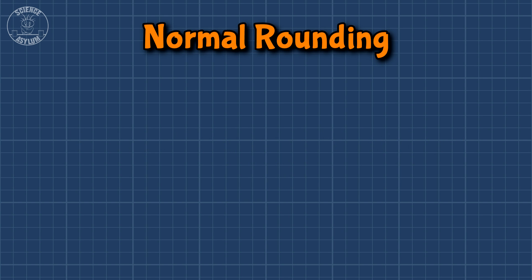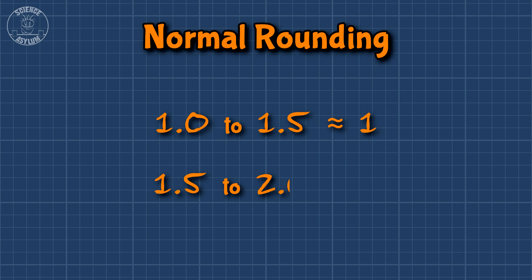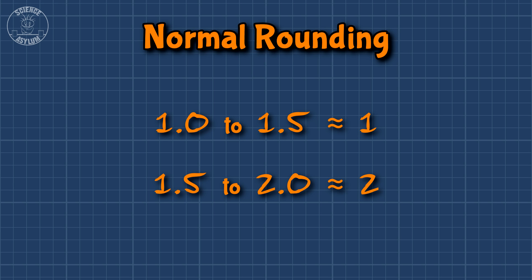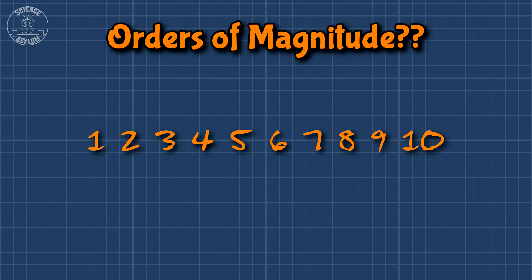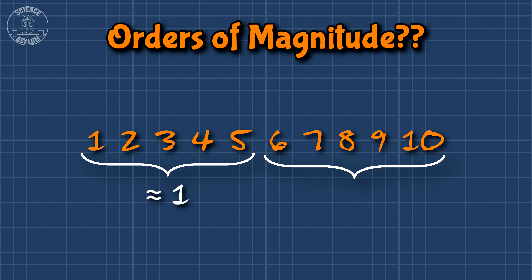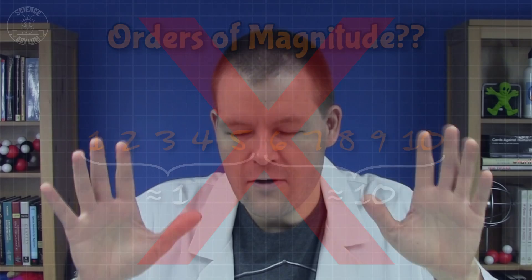Anything from 1.0 to just under 1.5 rounds down to 1. And anything from 1.5 to 2.0 rounds up to 2. So you would expect orders of magnitude to work the same way: anything from 1 to 5 rounds down to 1, and anything from 5 to 10 rounds up to 10. But you'd be wrong.